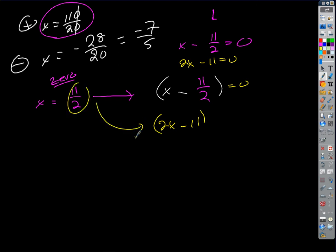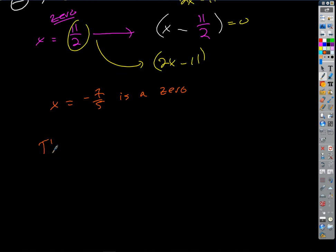Does that make sense? Okay, so what is, then, what's this one going to be? Now, don't say it out loud. If that's my zero, x equals negative 7 fifths is a zero. The factor, the simplest factor, without fractions, right? That goes with it is what? 5x minus 7. It's x plus, right?